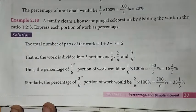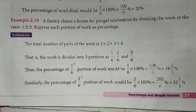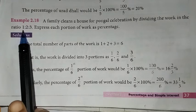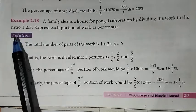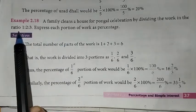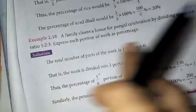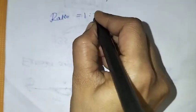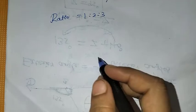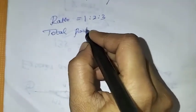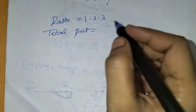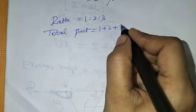We need to convert this to percentages. First, we convert to fraction, then we convert the percentage. How do we convert the fraction? First, find the total part of the work. The ratio is 1 is to 2 is to 3, so the total part is 1 plus 2 plus 3.